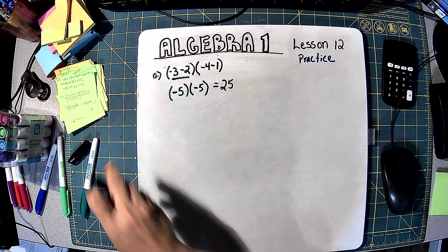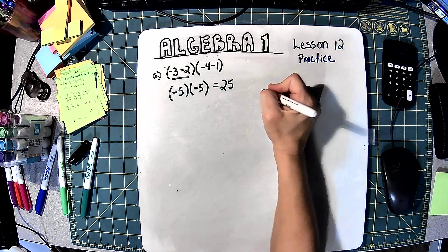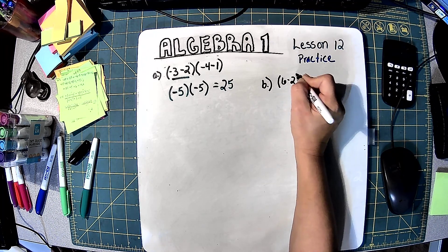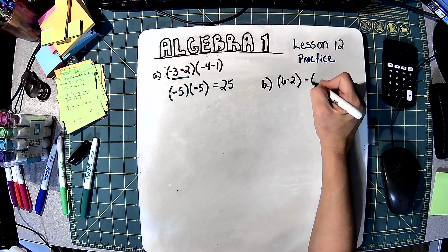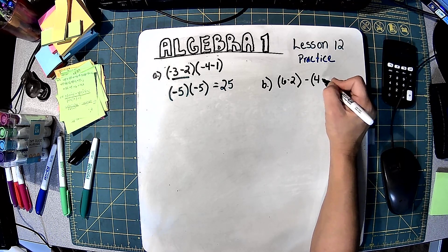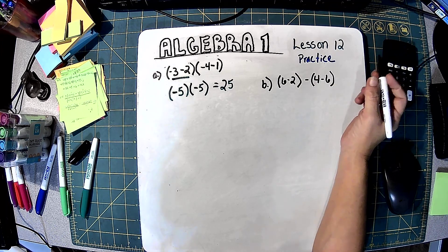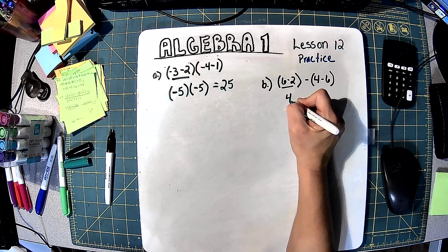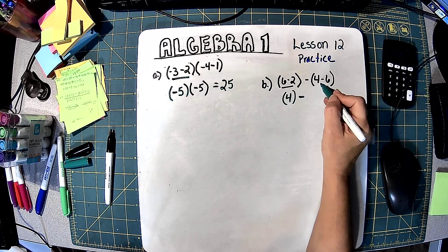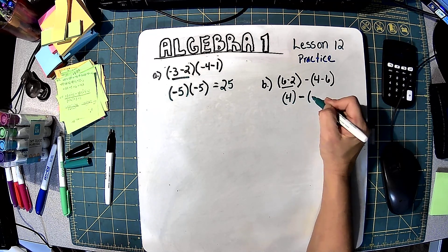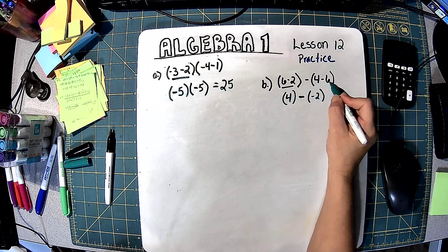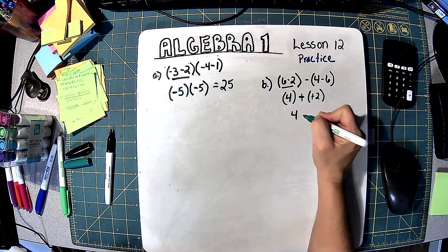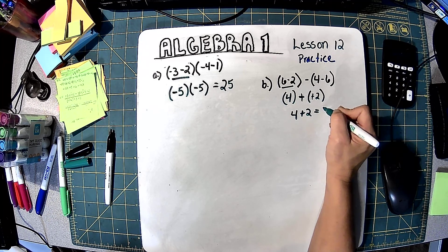Practice B is (6 minus 2) minus (4 minus 6). First, work inside the parentheses: 6 minus 2 is 4, leaving my parentheses on. Minus: 4 minus 6 is negative 2. Now I have a negative and a negative together, so those cancel into a positive. Now I can say 4 plus 2, so this one equals 6.